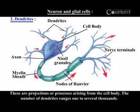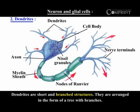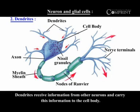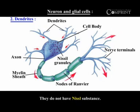Dendrites. These are projections or processes arising from the cell body. The number of dendrites ranges from one to several thousand. Dendrites are short and branched structures, arranged in the form of a tree with branches. Dendrites receive information from other neurons and carry this information to the cell body. They do not have Nissl substance.